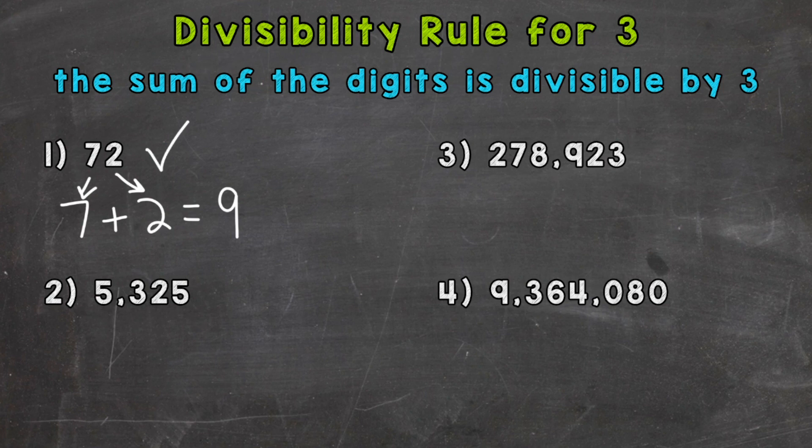On to number 2 where we have 5,325. Let's find the sum of those digits. So 5 plus 3 plus 2 plus 5. So 5 plus 3 is 8, plus 2 is 10, plus 5 gives us 15.